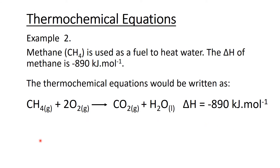Here is a second example: methane used as a fuel, with an enthalpy change of negative 890 kilojoules per mole. Since it's negative, energy was released — it's an exothermic reaction. The reactants are methane and oxygen, giving products of carbon dioxide and water. States are gas, gas, gas, and liquid. The enthalpy is delta H equals negative 890 kilojoules per mole.